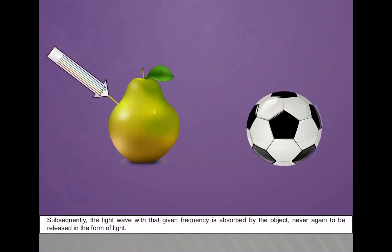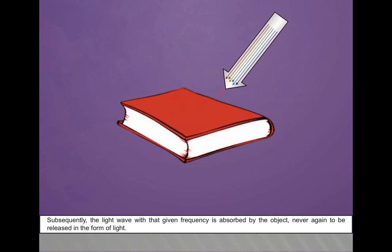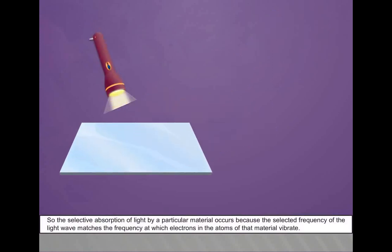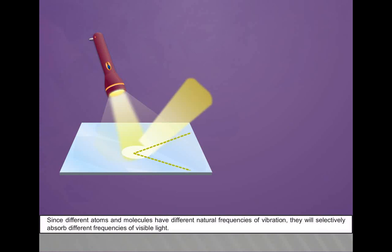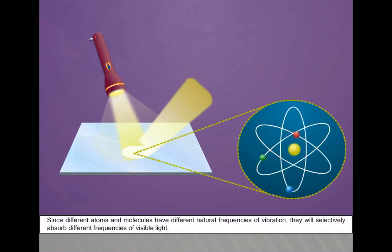Subsequently, the light wave with that given frequency is absorbed by the object, never again to be released in the form of light. So the selective absorption of light by a particular material occurs because the selected frequency of the light wave matches the frequency at which electrons in the atoms of that material vibrate. Since different atoms and molecules have different natural frequencies of vibration, they will selectively absorb different frequencies of visible light.